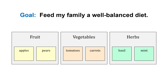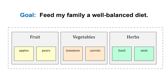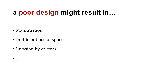Drilling down another step further: in fruit I have apples and pears, in vegetables tomatoes and carrots, and in herbs basil and mint. I'm plotting out what goes in specific areas of the garden. Taking it even further, I design a gate or fence around the garden to protect my food from animals. I'm slowly going from conceptual concepts into more detailed designs. I want to design this before planting because a poor design might result in malnutrition, inefficient use of space, or invasion by critters. Spending time modeling up front ensures the garden actually achieves the goals I've set out.